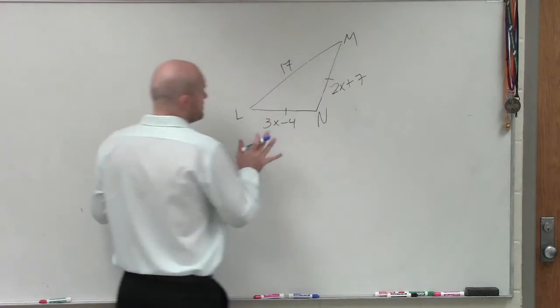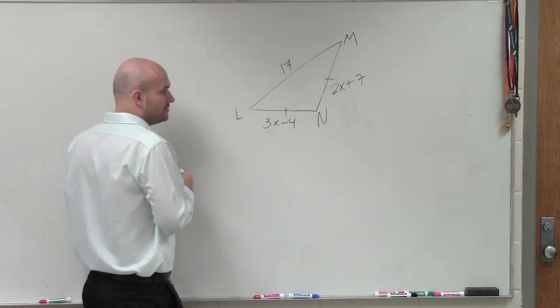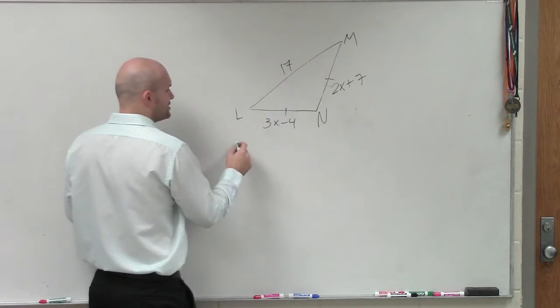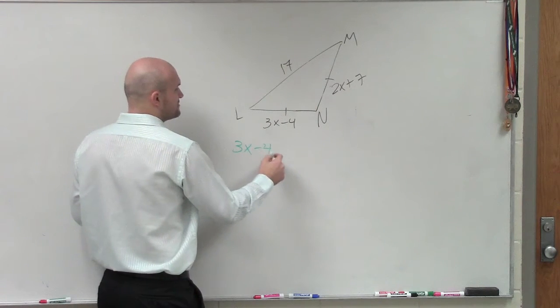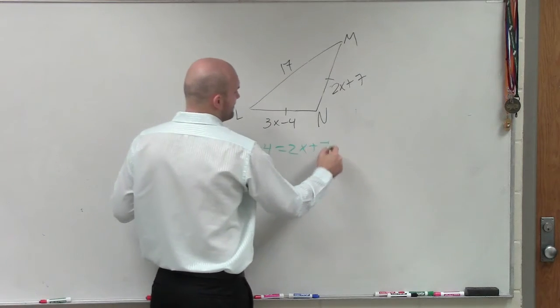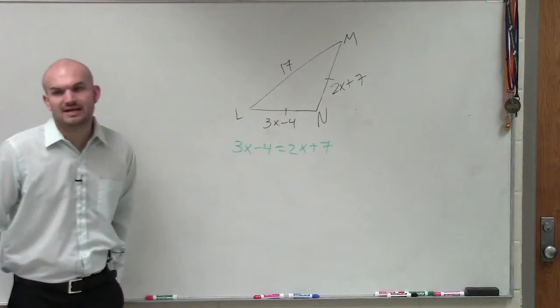But still, we want to find the measure of every angle. So therefore, we can still create an equation. But for this one, it would be 3x minus 4 is equal to 2x plus 7. Does everybody agree with that statement?